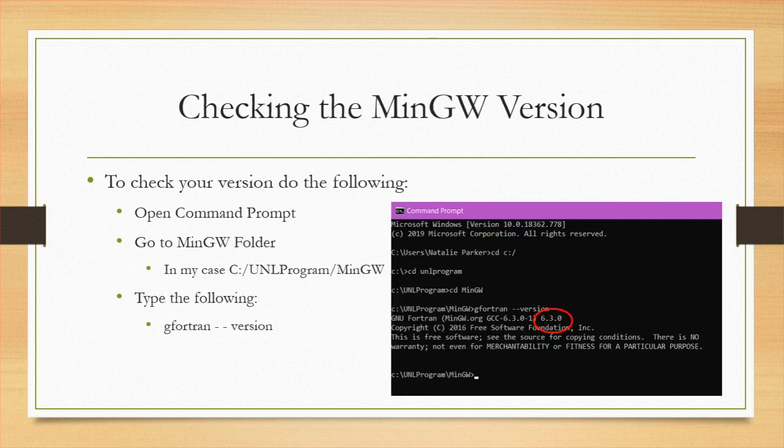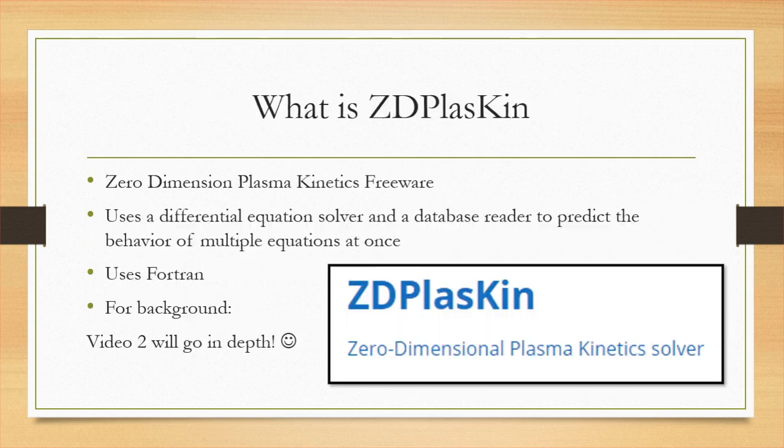Open your command prompt and locate the MinGW folder. Type gfortran --version and hit Enter, and it'll show you which version you're using. Alright, so next up, we are going to talk about the ZD Plaskin software. ZD Plaskin stands for Zero Dimension Plasma Kinetics. It uses a differential equation solver and a database reader to predict the behavior of many equations at once. It reads gfortran, which is why we needed our MinGW compiler.